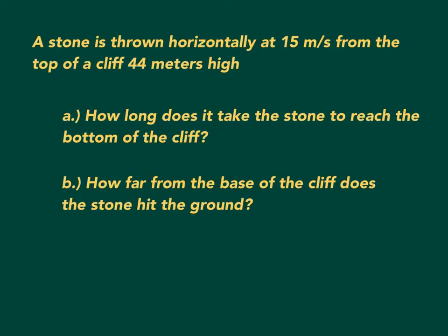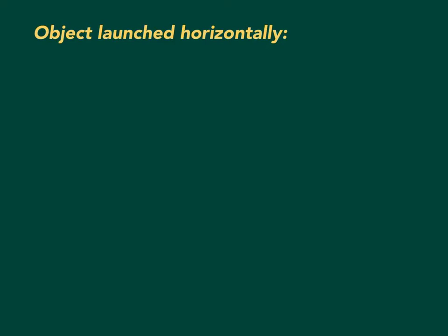Here's an example of a problem where the projectile — in this case a stone — is launched horizontally. The stone is thrown horizontally at 15 meters per second from the top of a cliff 44 meters high. We're asked two questions: how long does it take the stone to reach the bottom of the cliff, and how far from the base of the cliff does the stone hit the ground? The key is to realize the object is moving in two directions at once — horizontally and vertically.